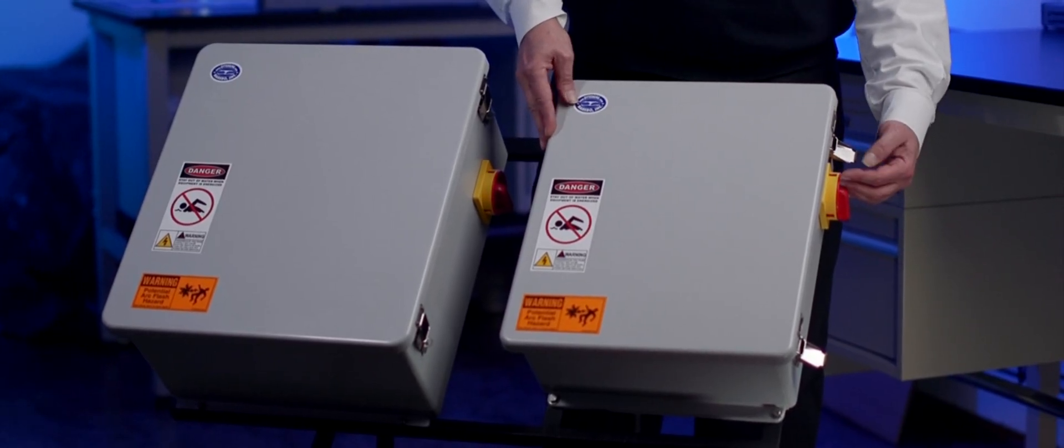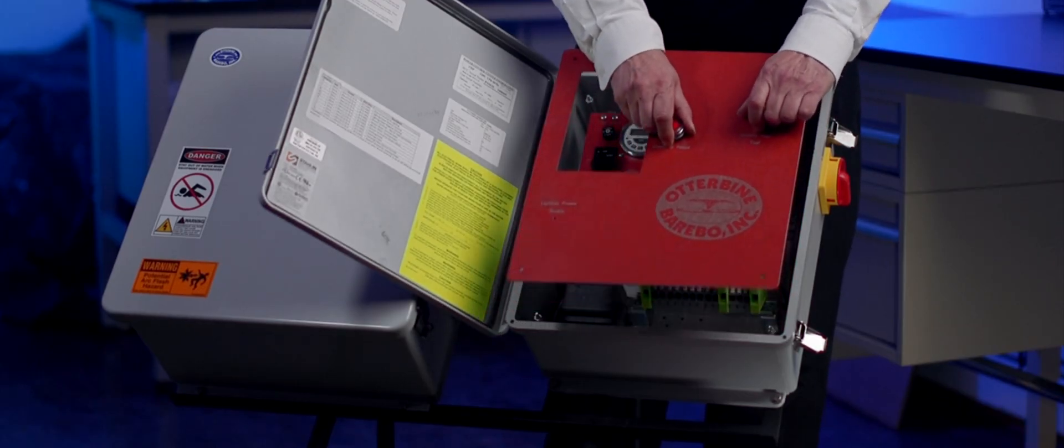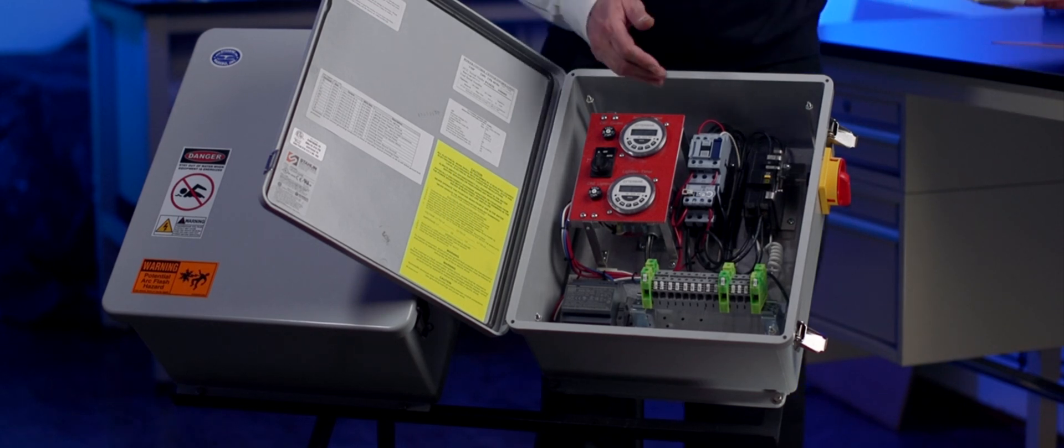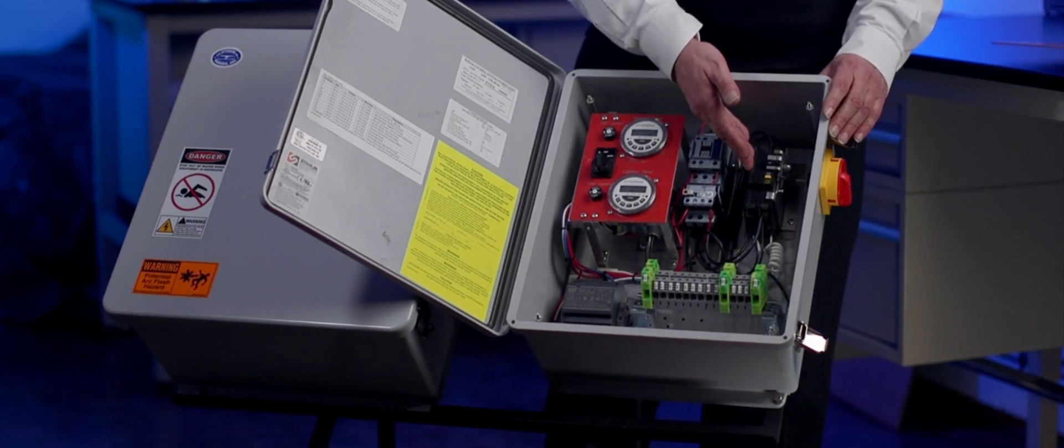Both panels now have a side-operated disconnect switch with a shorter shaft, which eliminates alignment and breakage issues. And both now have removable cover panels. This cover provides easy access to all panel components, which means easier installation and service.